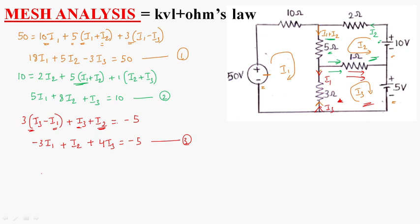On solving these three equations, we get I1 = −3.3, I2 = 0.9, and I3 = −1.4. This is about Mesh Analysis. Thank you.